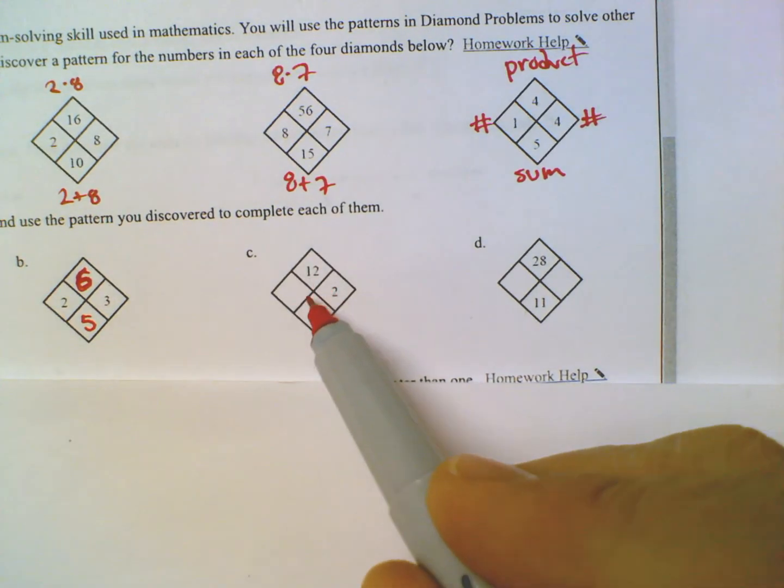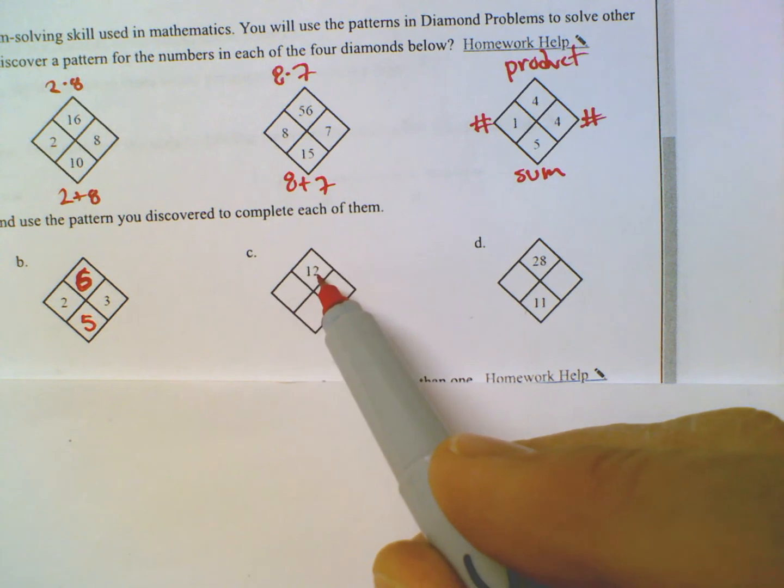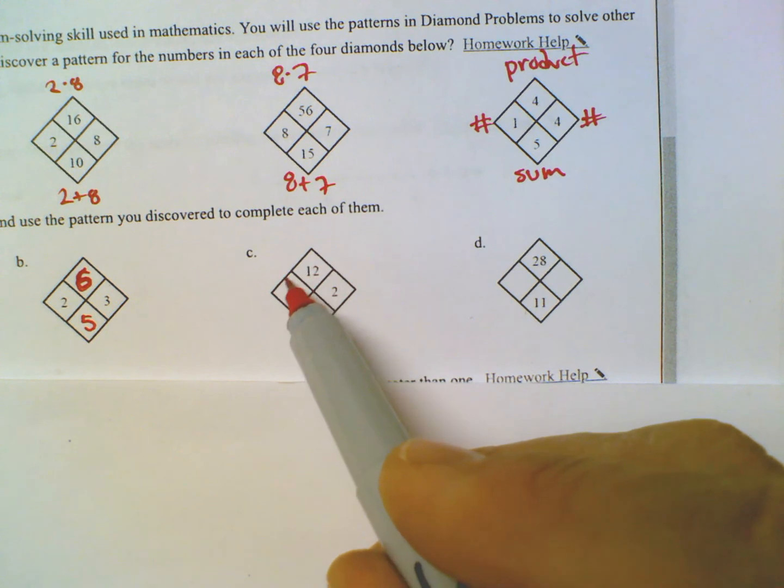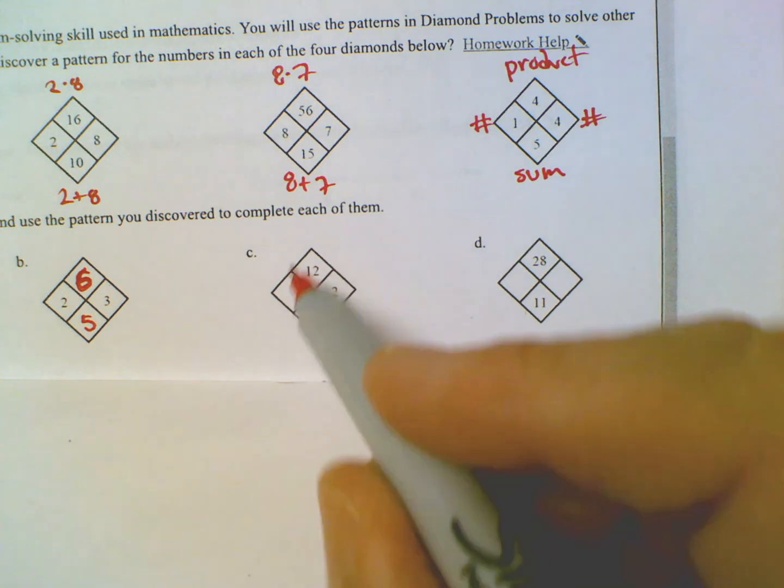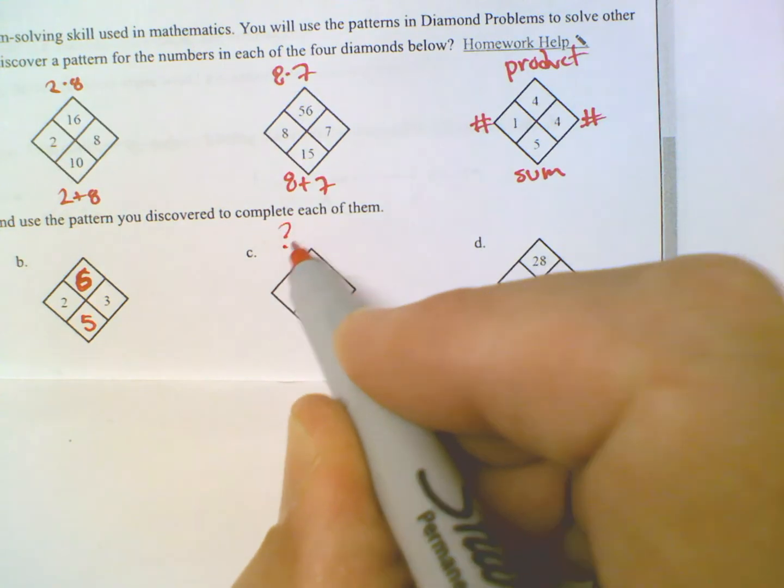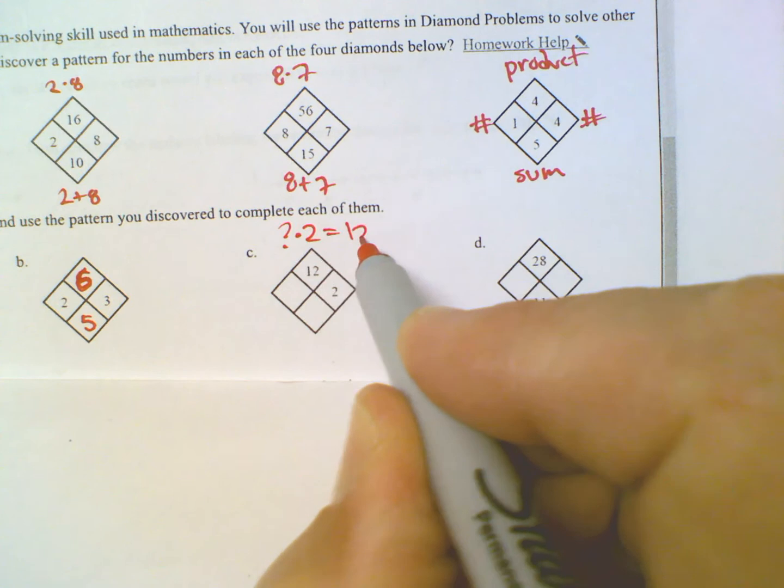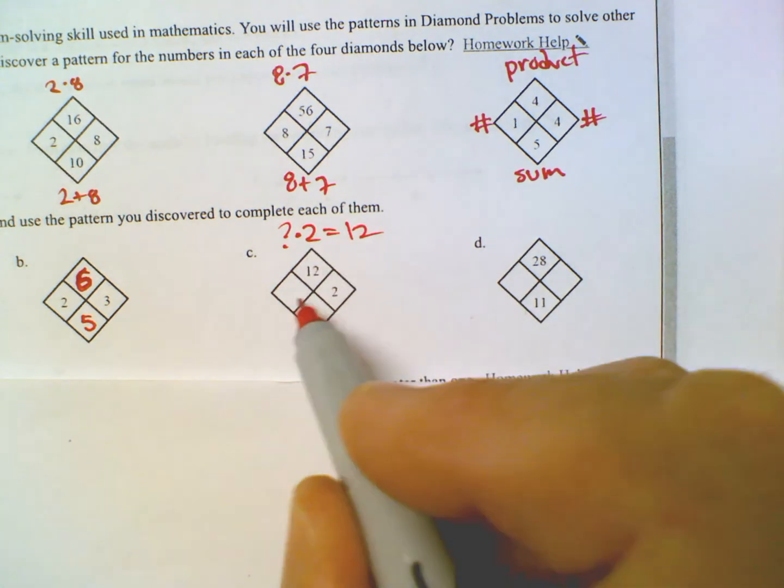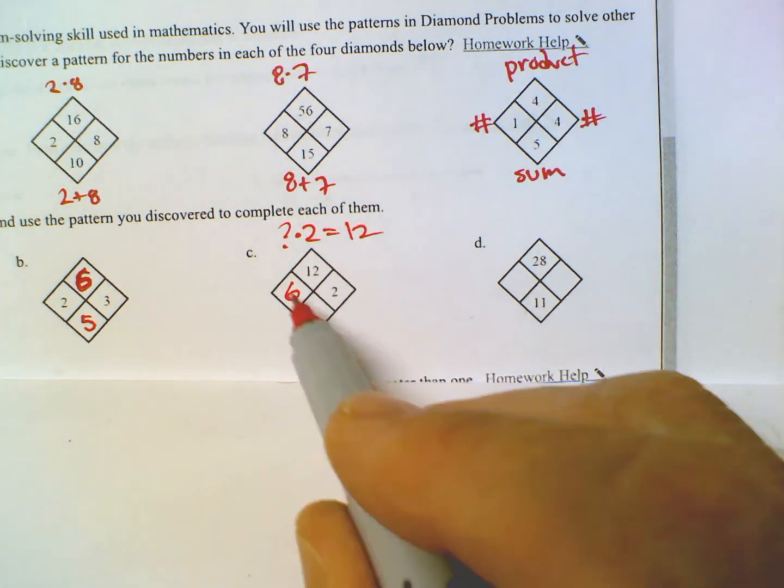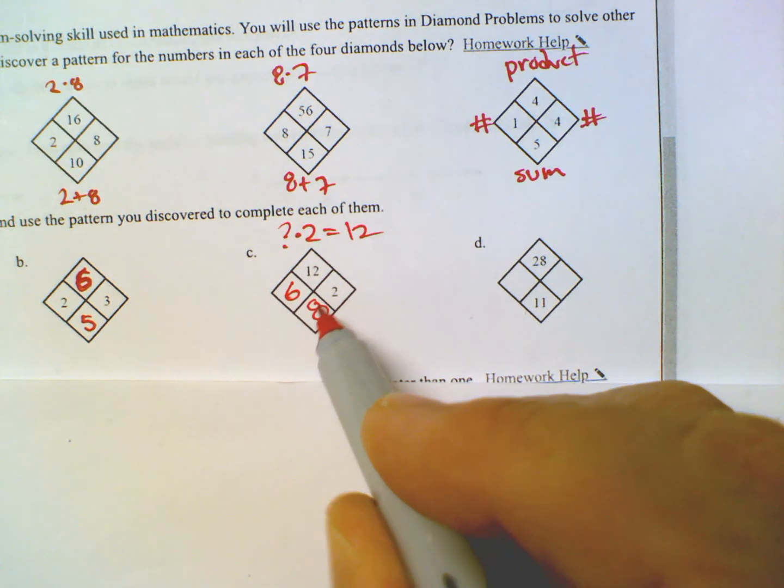Now, this one's interesting because we don't know this number, but they do give us the product. So the question is, what times 2 is 12, right? To figure this out, you got to figure out what that number is. So it's something times 2 is 12. What is that something? Oh, well, that's 6. 6 times 2 is 12. Once I get that number, now I can fill out the bottom, 6 plus 2 to get 8.